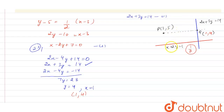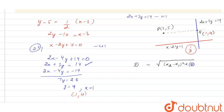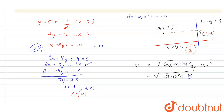Now we need to find the distance between point P = (3, 5) and point Q = (1, 4). Using the distance formula: distance = √((x₂ - x₁)² + (y₂ - y₁)²), we calculate √((3-1)² + (5-4)²) = √(4 + 1) = √5. So the final answer is √5.